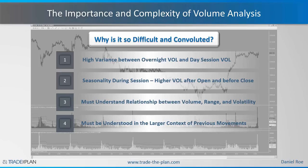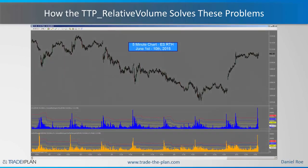Now that we've given that extremely long introduction — which was necessary so you understand what the relative indicators are actually doing for you — we're actually going to discuss how the relative volume deals with all of these problems, helping you make sense out of the volume data. Here we have that same regular trading hours chart of the ES with both volume and volume per range with standard deviation bands applied, and now here we have the same chart but with the TTP relative volume indicator applied.